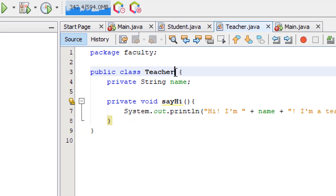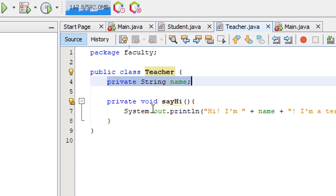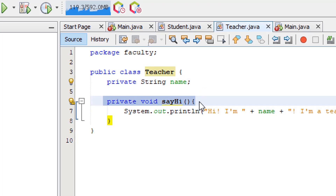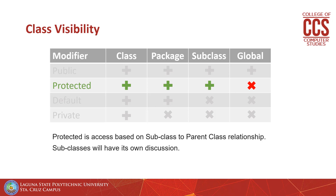Only the student class can access its own name attribute and sayHi method, and only the teacher class can access its own attribute and method. Once we get into the topic of subclasses, we'll revisit the protected access modifier to illustrate how it works. For now, this is all for access modifiers — see you in the next video.